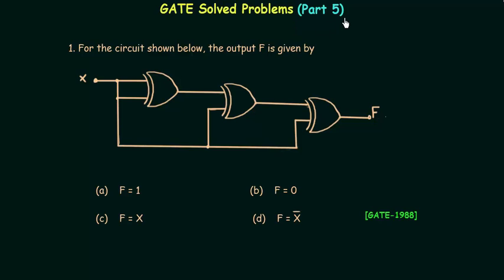In this part we will solve two problems that appeared in the GATE 1988 paper. In the first problem we have to find the output f for the given circuit. In this circuit we have three XOR gates, and all three XOR gates have two inputs, so we are dealing with two-input XOR gates.